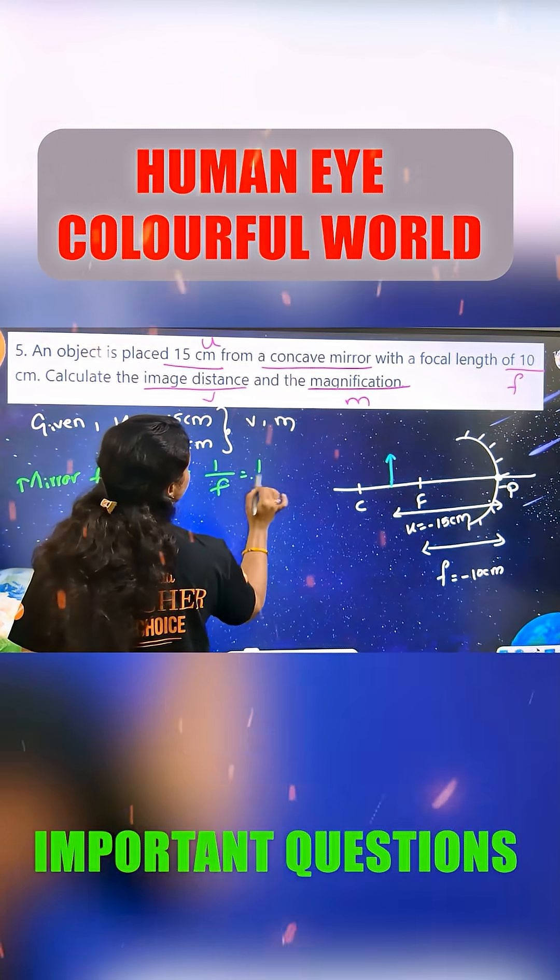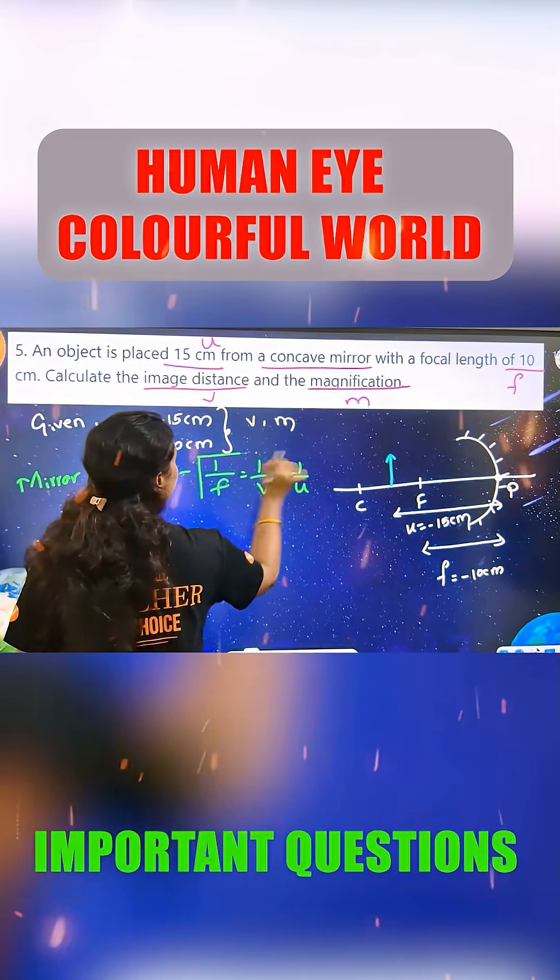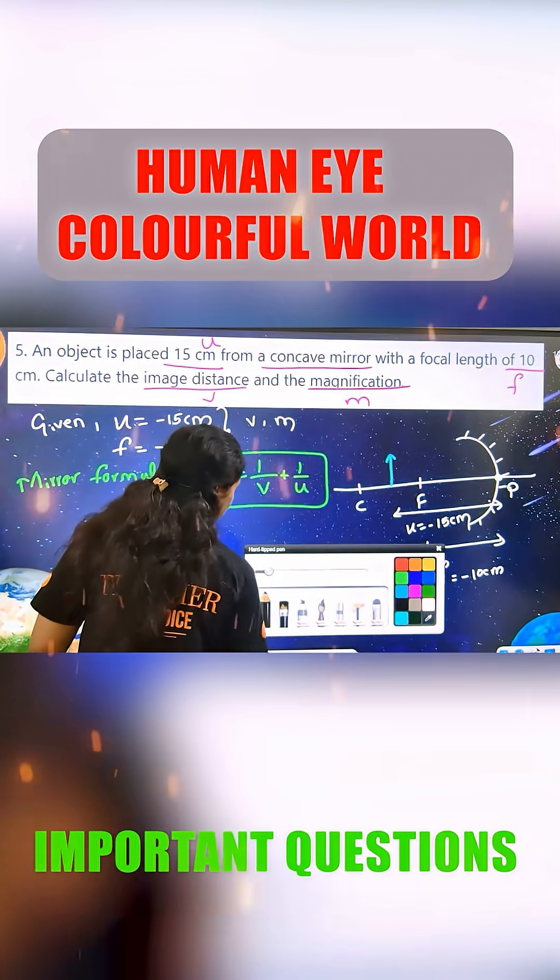What is mirror formula? 1 by F is equal to 1 by V plus 1 by U. This is the mirror formula.